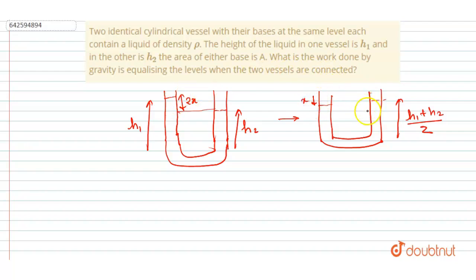So what's the decrease in height? The decrease in height will be h₁ minus... this will be the decrease in height, right? Okay, so this difference is (h₁ - h₂)/2. So we got the height difference. Can we calculate the mass of this much height? So the mass of this much height will be ρ...